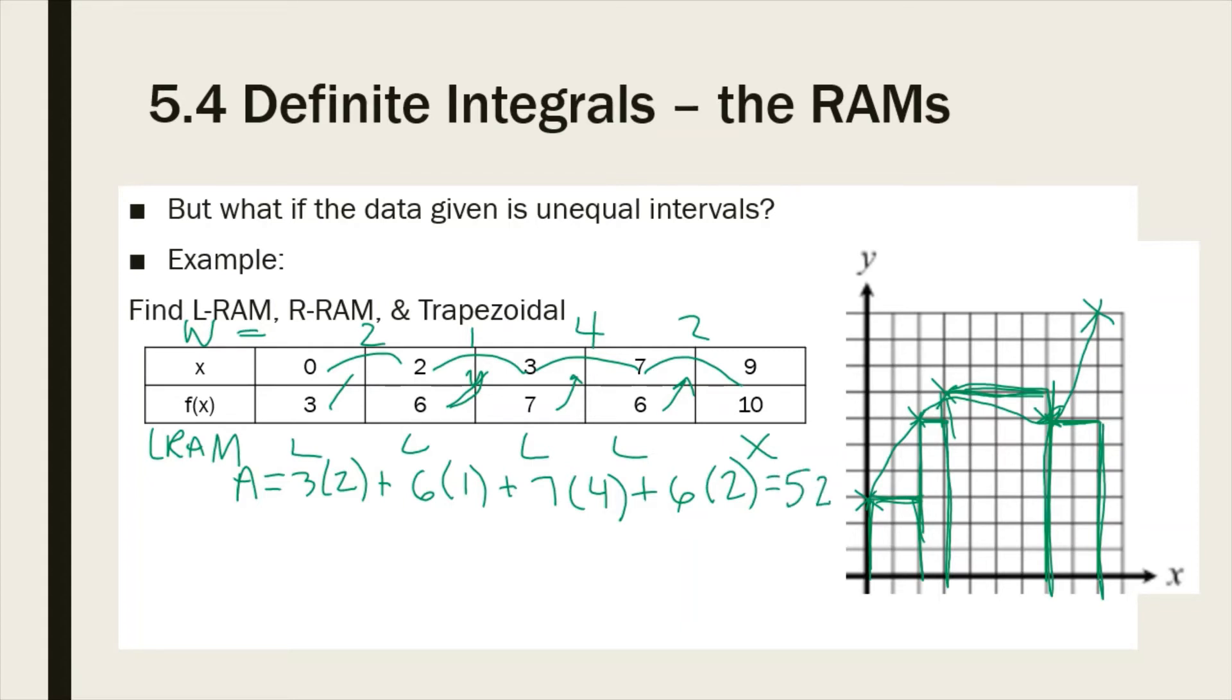And we don't have to multiply anything at the end because we already multiplied by our width, our other measurement. Each length times width has already been taken care of. So we're done. 52. Done.